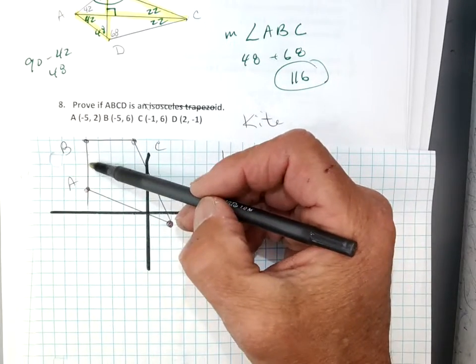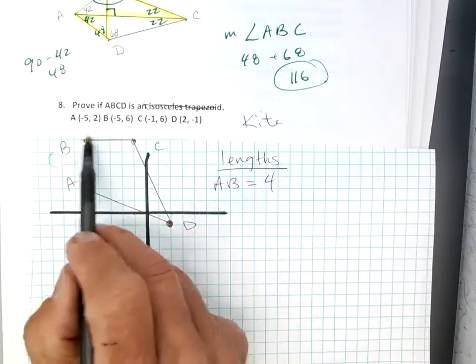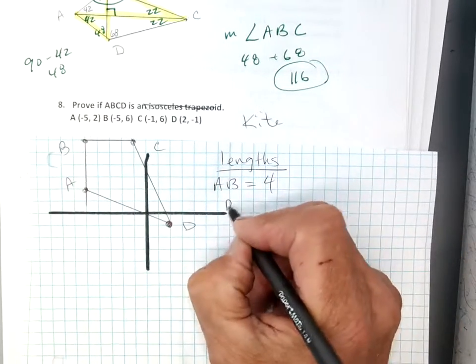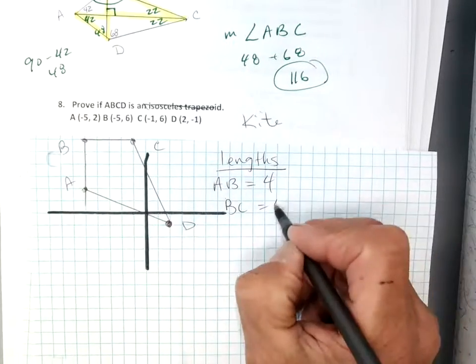And the length of B, C, we can do that, B, C. We can just count it. One, two, three, four, okay? Now, C, D. C, D is on a diagonal. So to get the length, we're going to have to use Pythagorean's theorem, okay? But you can do that. That's not a hard problem because we're going to make a right triangle.